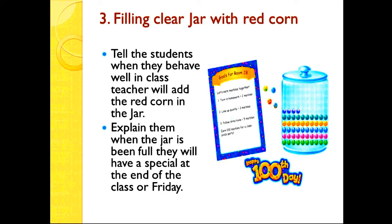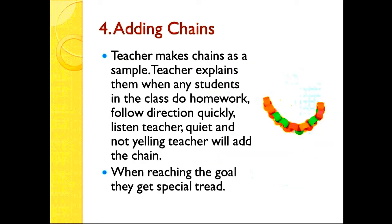Number three: a clear jar with red corn — or you can fill it with different colored things, but the jar needs to be clear so you can put it on top of the table and students can see it. Tell the students: when they behave well in class, the teacher will add red corn into the jar. Explain that when the jar is full, they will have a special activity at the end of class or at the end of Friday.